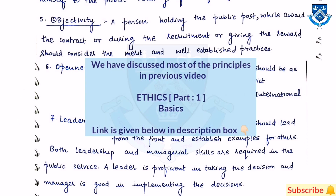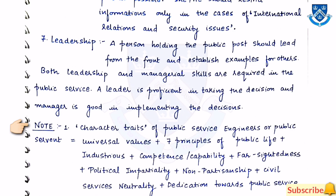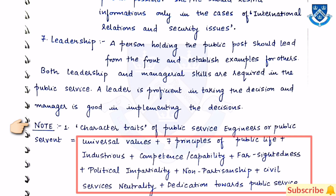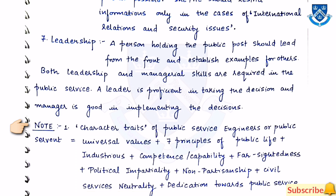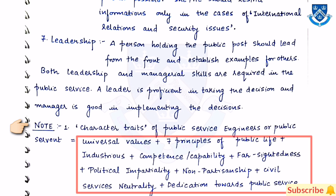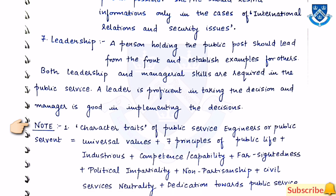We have discussed most of these principles in the previous video, so you can check that out. One important note: the character traits of public service engineers equals universal values plus seven principles of public life plus industrial competence or capability plus farsightedness plus political impartiality plus non-partisanship plus civil service neutrality plus dedication towards public service.